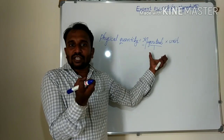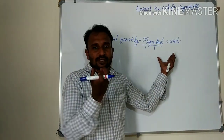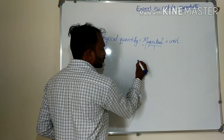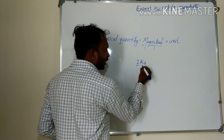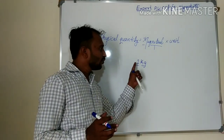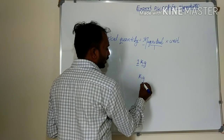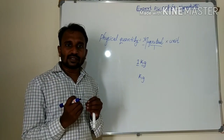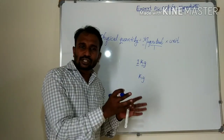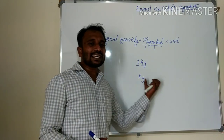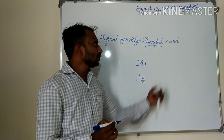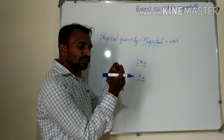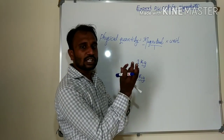Magnitude means a particular quantity — it means numerical values, or numbers. For example, one kg of sugar. If we say only 'kg of sugar,' we don't know the exact value, only the unit kg. So 1 kg, 2 kg, or 10 kg — the numbers 1, 2, 10 represent the magnitude, meaning a particular quantity. The kg represents the unit.